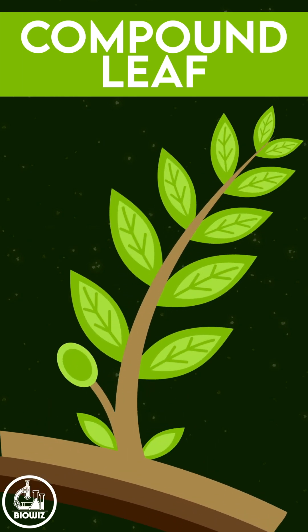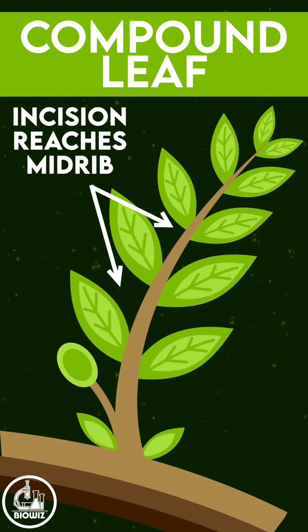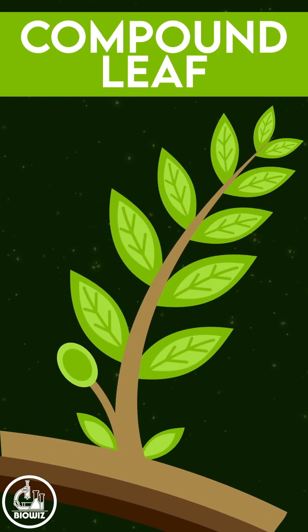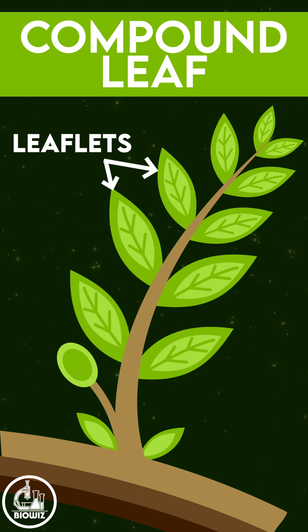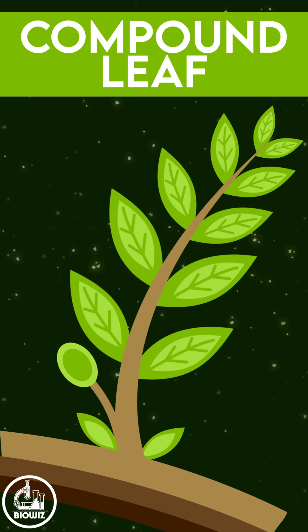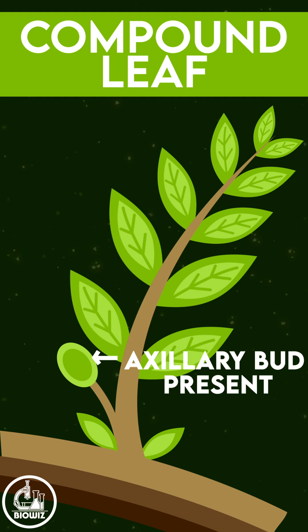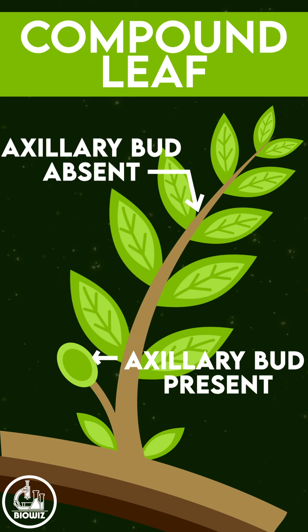In compound leaves, the incision reaches the mid-rib and the lamina gets divided into small leaf-like structures called leaflets. An axillary bud is present at the axil of the leaf but absent at the axil of the leaflets.